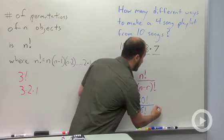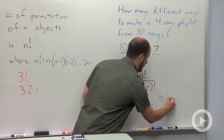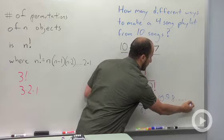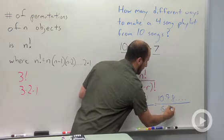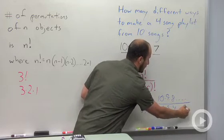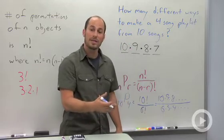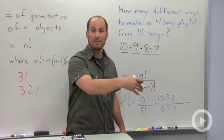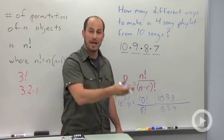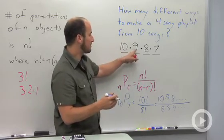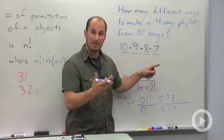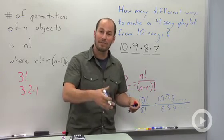If we were to write this out, what we would end up with is 10 times 9 times 8 and so on and so forth, and the bottom is 6 times 5 times 4 and so on and so forth. What's going to end up happening is the 6, 5, 4, 3, 2, and 1 are going to cancel from the top and the bottom, just leaving us with the 10 times 9 times 8 times 7.